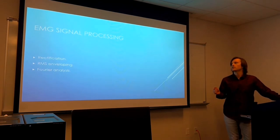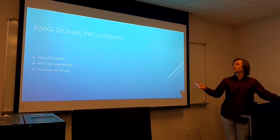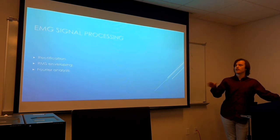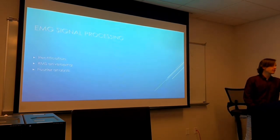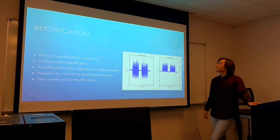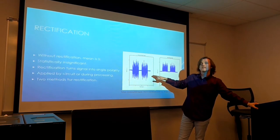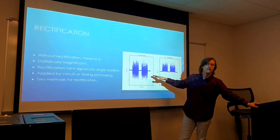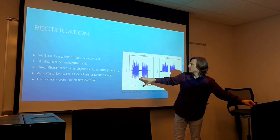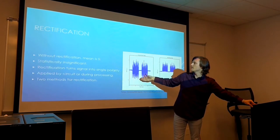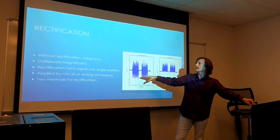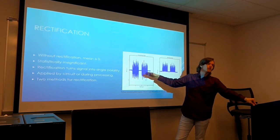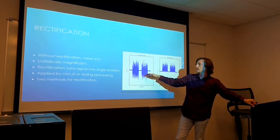Once you get the signal out from your analog-to-digital converter, you have a bunch of numbers and now need to figure out what to do with them. There are three main techniques used for processing electromyographic data: rectification, root mean squared, and Fourier analysis. When you receive your raw EMG data — assuming you don't have rectification and RMS components in your circuit — you'll get something with amplitude peaks on both positive and negative polarity. The problem is that EMG signals naturally average to about zero, so you can't do much useful analysis with that.